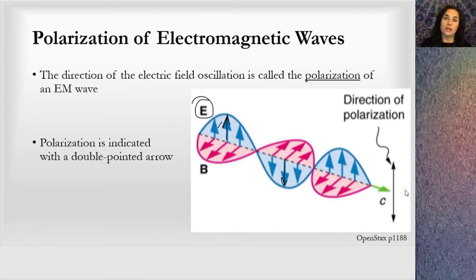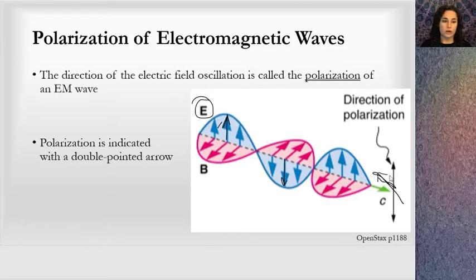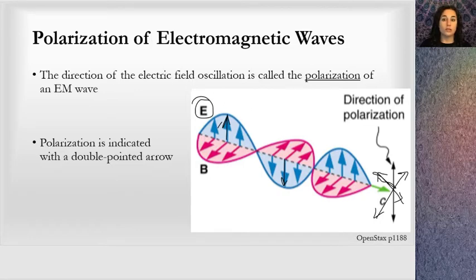The electric field could oscillate in any direction — any angle in the 360 degrees around that axis. It could be in this direction, or this direction, etc. That's the definition of polarization of light. And because polarization is the direction of the electric field, you can imagine that the polarization relates to the magnitude of that electric field and also to the energy of the light.